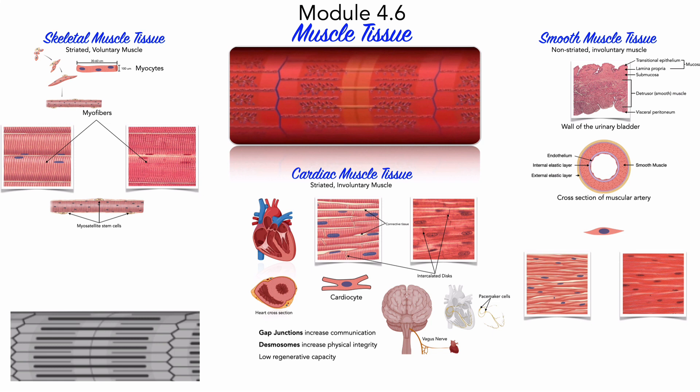Join us next in Module 4.7 as we continue our overview of the four tissue types of the human body. There, we'll look at the general characteristics of neural tissue.